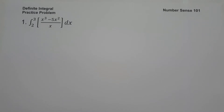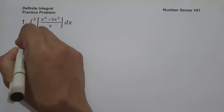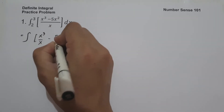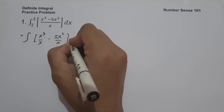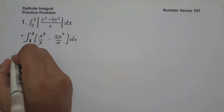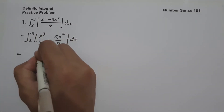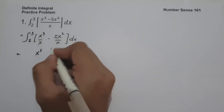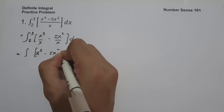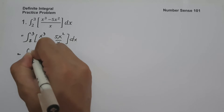On the first example, what is the antiderivative of x cubed minus 5x squared all over x dx evaluated from 2 to 3? To simplify, let us write the integrand as x cubed over x minus 5x squared over x. So x cubed over x is x squared and negative 5x squared over x is negative 5x. We are going to have the antiderivative of x squared minus 5x dx evaluated from 2 to 3.